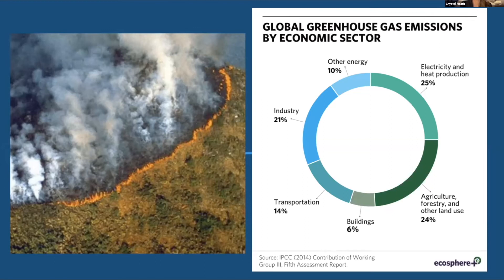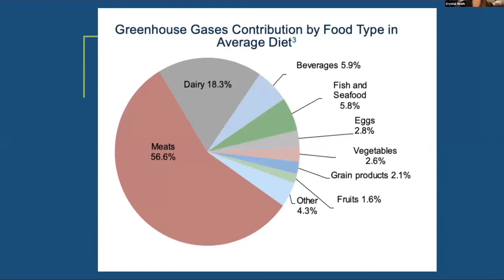Looking at one sector of agriculture that causes four percent of global greenhouse gas emissions — this graph shows all the different factors contributing to global emissions. Broken down by food type, meat production is one of the most important ways humanity affects the environment.